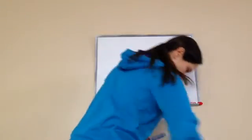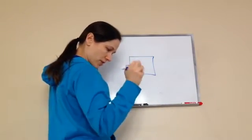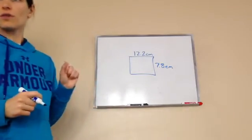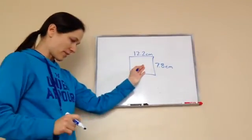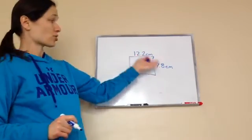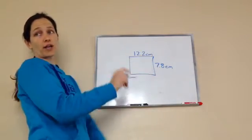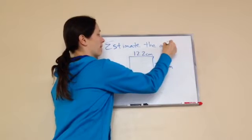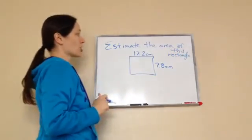Let's do a rectangle. So for the last one, draw a rectangle and we'll find the area using two measures. I have 12.2 centimeters and 7.8 centimeters. It's a rectangle — it looks like a square, but it's a rectangle. We're doing area, not volume, because there are just two measures and it's a 2D object. They want us to estimate the area, so estimate means rounding first, then doing the problem after. The two keywords are estimate and area.